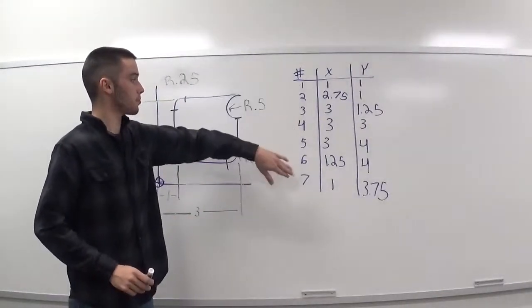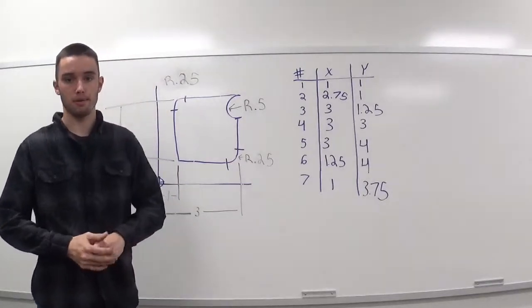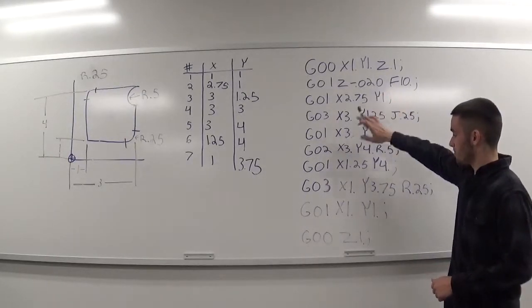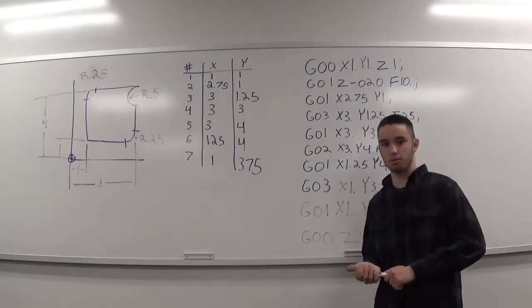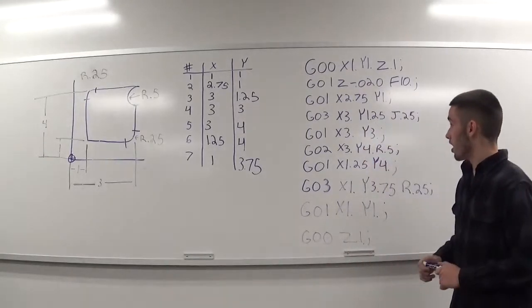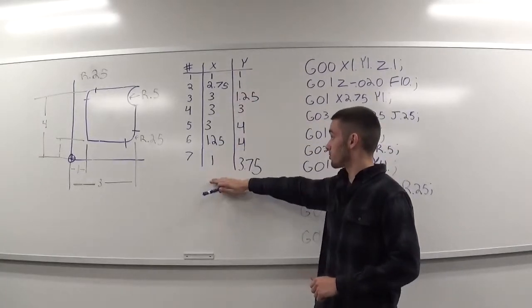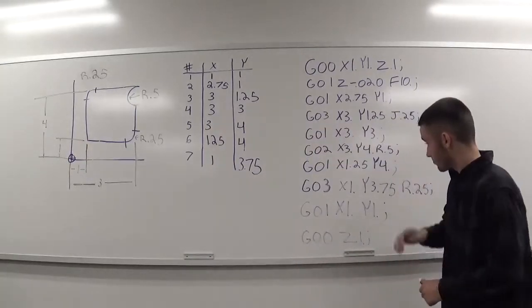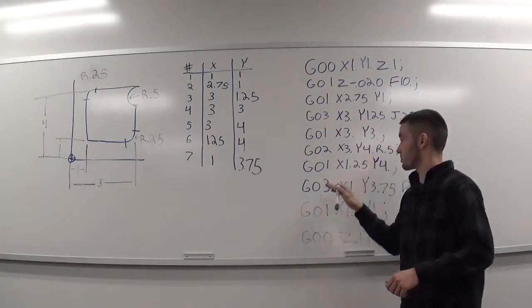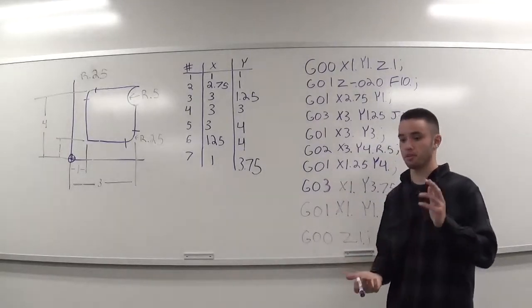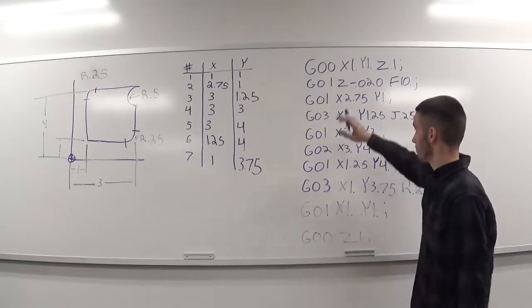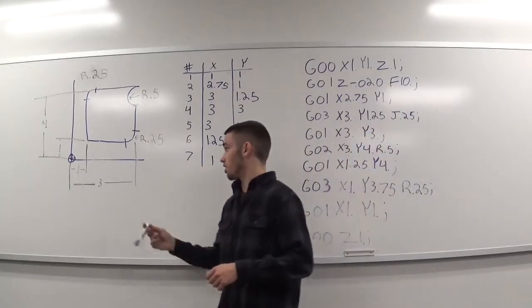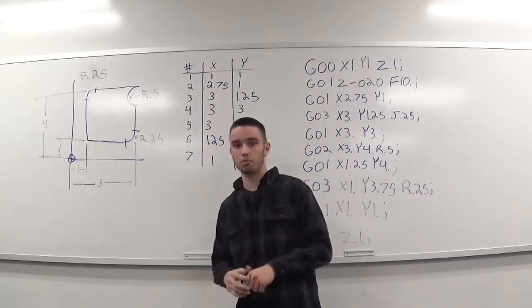These start points and end points will really help us when it comes to making our program. All right. So, I made a very easy program to follow using G00, G01, G02, and G03, using the points that we called out here. And this will be the contour that we're using. The program here, we're just going to pretend that I already called up the tool. I already turned on the spindle. The spindle speed, you know, everything's already there. We're just using G00, G03. We're in absolute dimensioning. Z0 will be the top of the part. And we'll go from there.